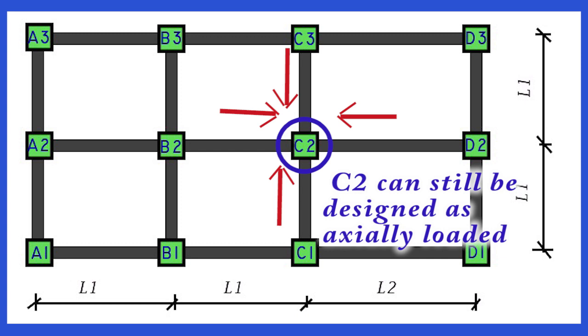As such, column C2 can safely be designed by considering the axial load only, but using slightly reduced values of the design stresses in the concrete and steel reinforcement as outlined in BS8110 code.